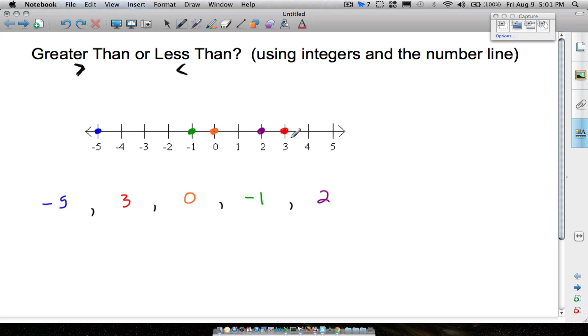The smallest number will be the number that's farthest to the left. In this case, out of all these numbers you have, negative five is the smallest number because it's the farthest to the left.